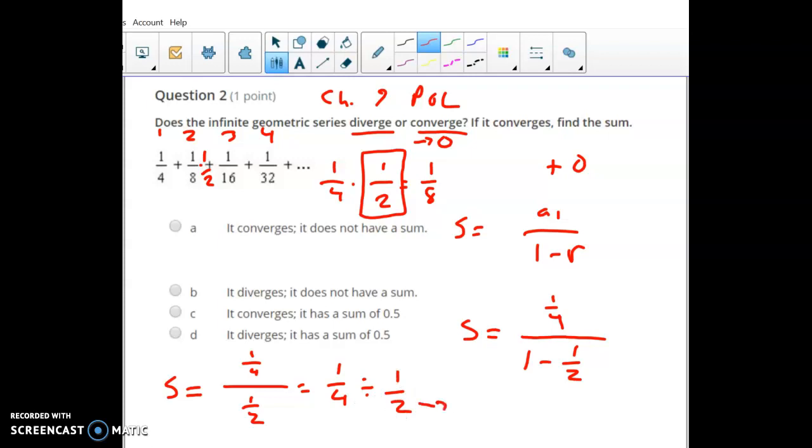So it would be 1/4 times 2 over 1, and then that would be just multiply the numerators, multiply the denominators, and so we end up with 1/2. So that's our sum of these infinite terms. And these aren't very big, so it kind of makes sense that their sum is also not very big, just 1/2.